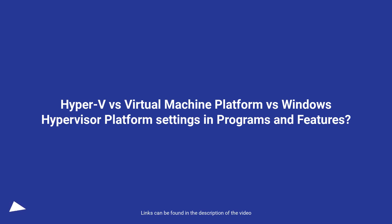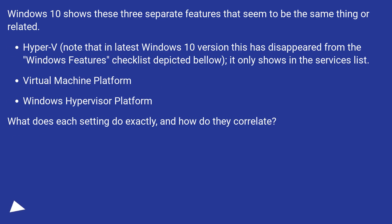Hyper-V vs Virtual Machine Platform vs Windows Hypervisor Platform — Settings, Programs & Features. Windows 10 shows these three separate features that seem to be the same thing or related: Hyper-V (note that in the latest Windows 10 version this has disappeared from the Windows Features checklist and only shows in the Services list), Virtual Machine Platform, and Windows Hypervisor Platform. What does each setting do exactly, and how do they correlate?